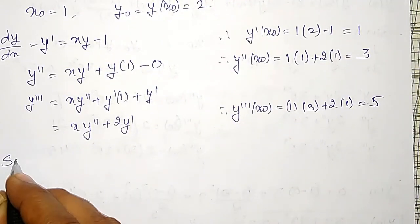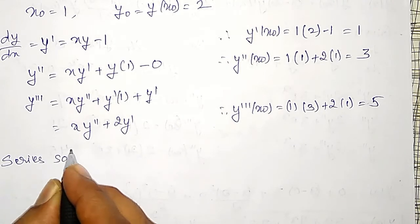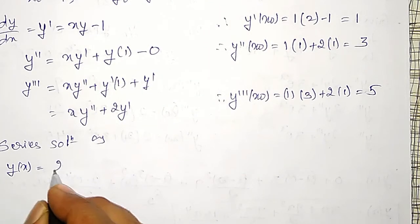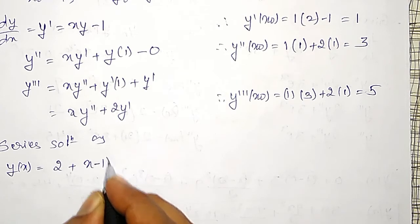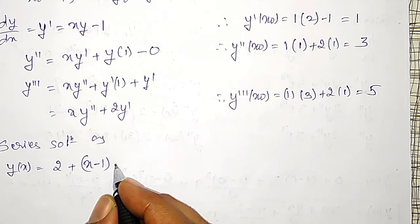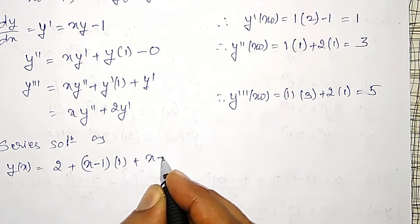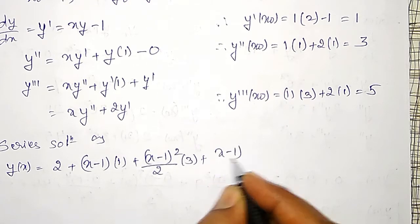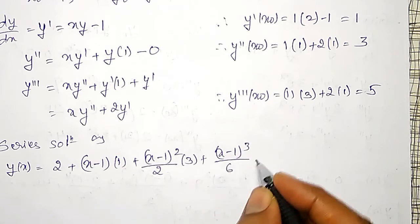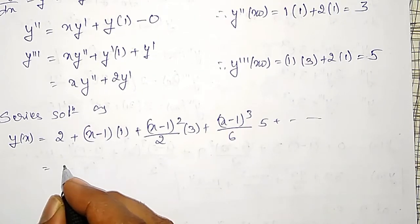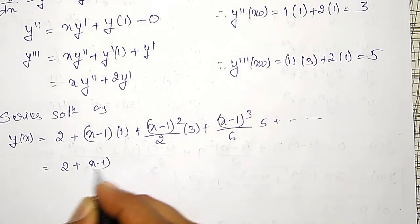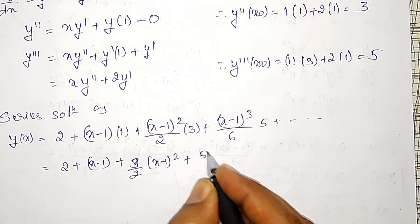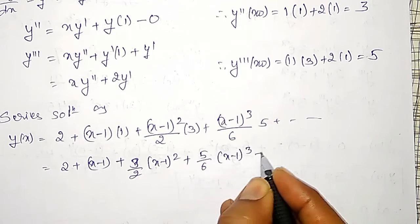The series solution is: y(x) = y(x₀) + (x−1)·y'(x₀) + (x−1)²/2·y''(x₀) + (x−1)³/6·y'''(x₀) + … = 2 + (x−1)·1 + (3/2)·(x−1)² + (5/6)·(x−1)³ + … This is the required series solution for the given differential equation.